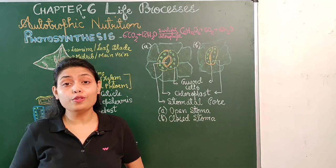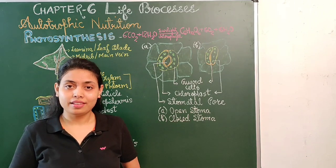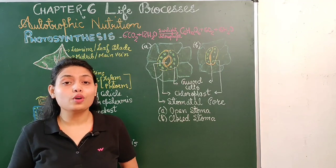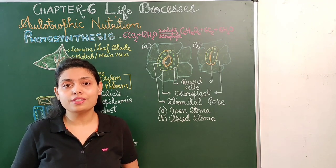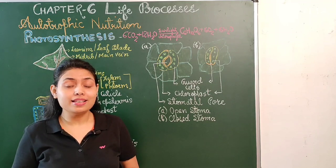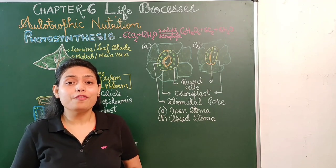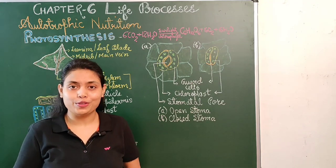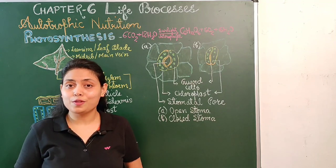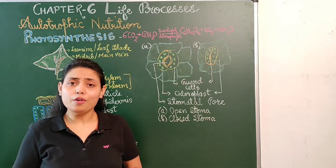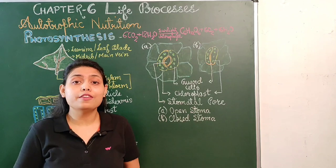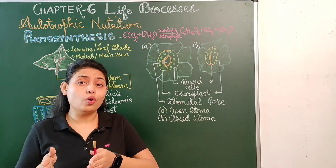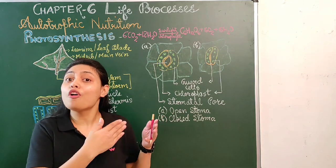Let us study about photosynthesis in word equation. Six molecules of carbon dioxide plus 12 molecules of water, in the presence of sunlight and chlorophyll, produces C6H12O6. This is a simple form of carbohydrate or glucose. Glucose is used by the plant as a source of energy, and some glucose is used for growth and development, while extra glucose is stored in the form of starch.